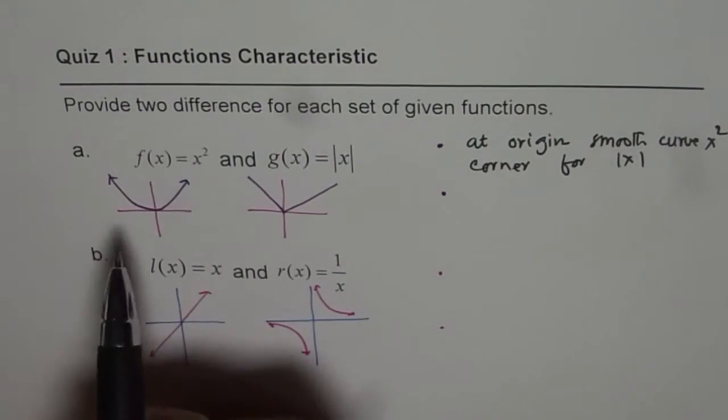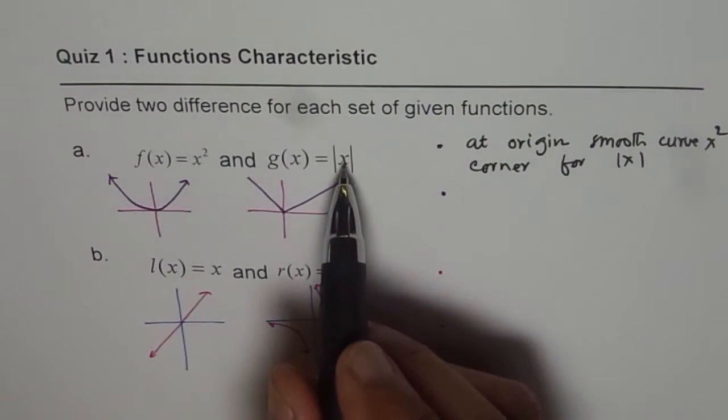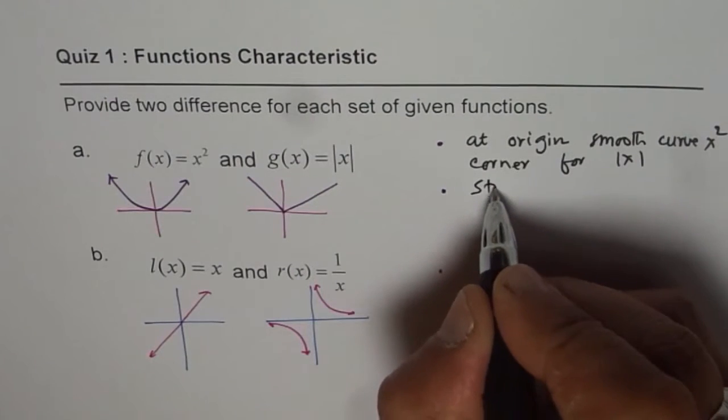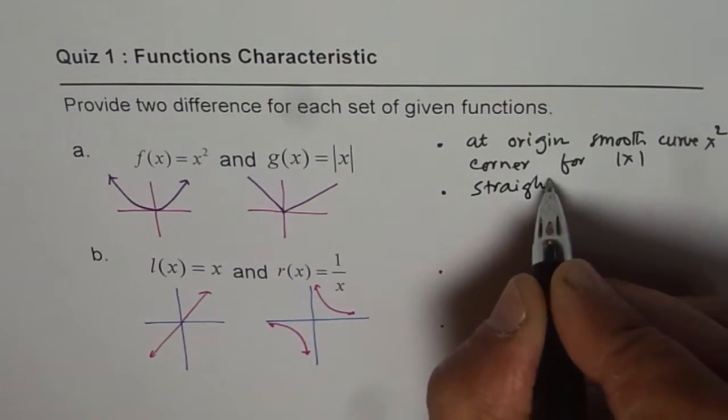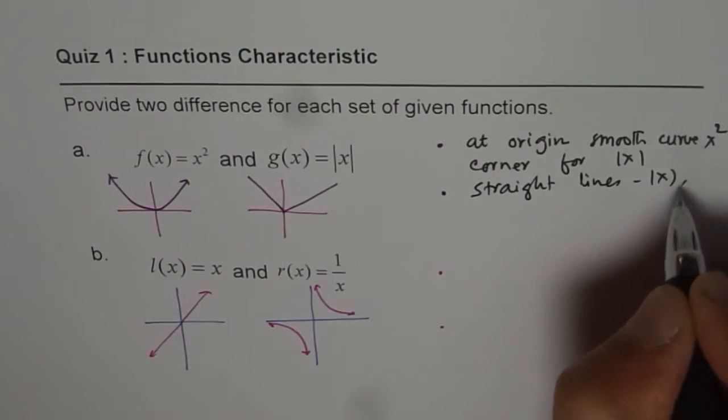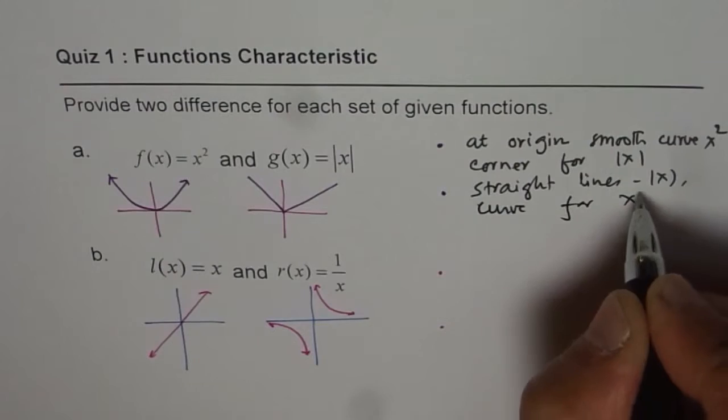Second, as you can see, absolute x has lines. Straight lines for absolute x and curve for x squared.